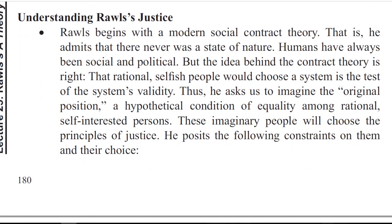Understanding Rawls' justice: Rawls begins with a modern social contract theory. That is, he admits that there never was a state of nature — humans have always been social and political. But the idea behind the contract theory is right: that rational, selfish people would choose the system is the test of the system's validity. Thus, he asks us to imagine the original position, a hypothetical condition of equality among rational, self-interested persons. These imaginary people would choose the principles of justice.